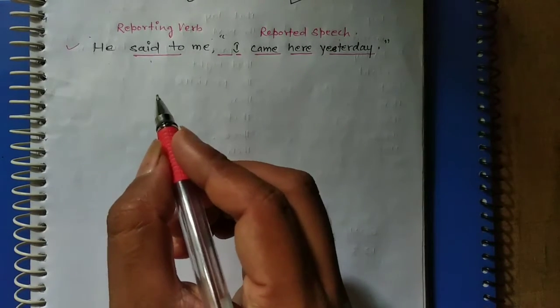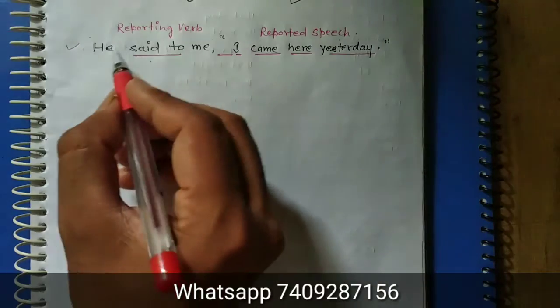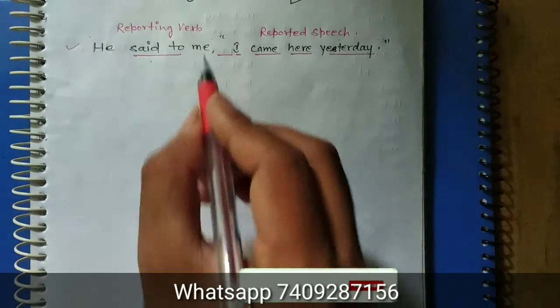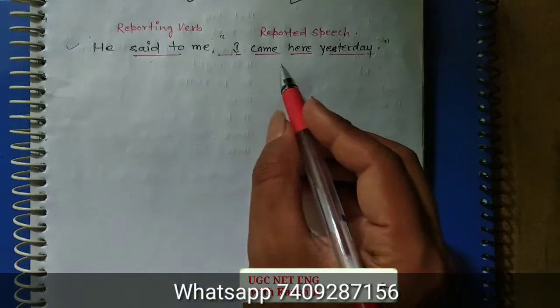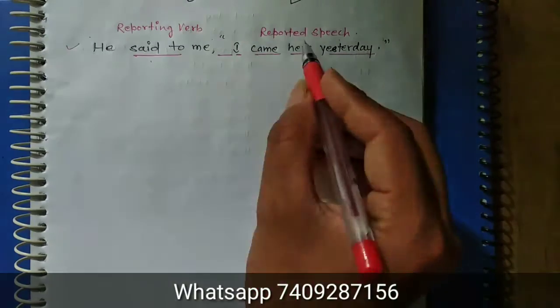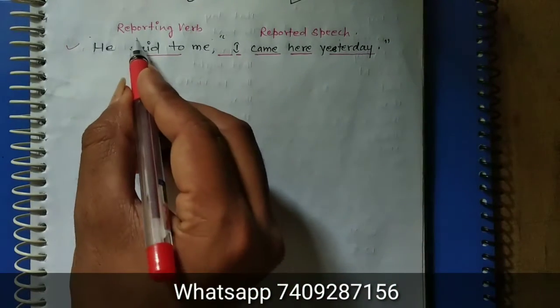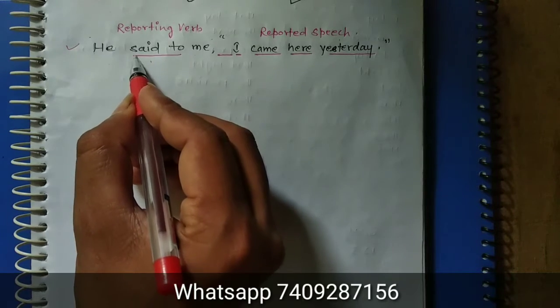Now first, this first part is called reporting verb in a sentence when you see such a sentence, and this part is called reported speech. In reporting verb there will be some changes. We will talk about this later and we will see how many changes we will do here.